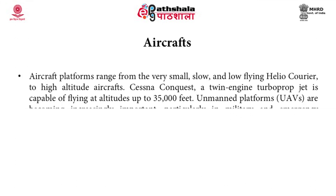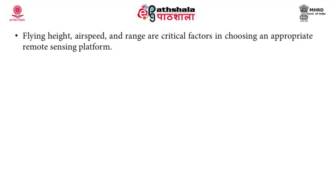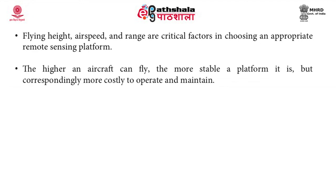Aircraft platforms range from the very small, slow, and low-flying heliocourier to high-altitude aircraft. The Cessna Conquest, a twin-engine turboprop jet, is capable of flying at altitudes up to 35,000 feet. Unmanned platforms are becoming increasingly important, particularly in military and emergency response applications. Flying height, airspeed, and range are critical factors in choosing an appropriate airborne remote sensing platform. The higher an aircraft can fly, the more stable a platform it is, but correspondingly more costly to operate and maintain.